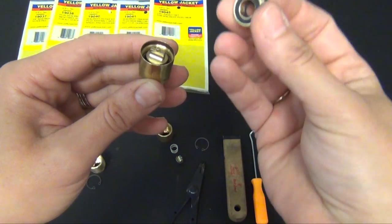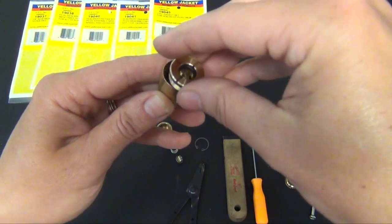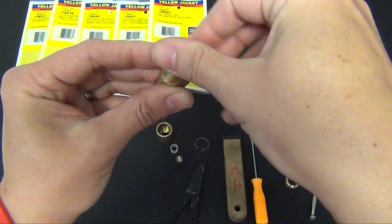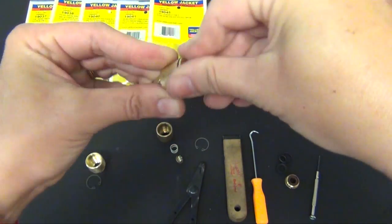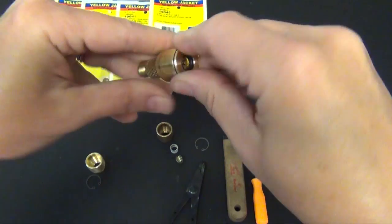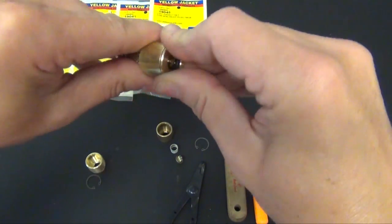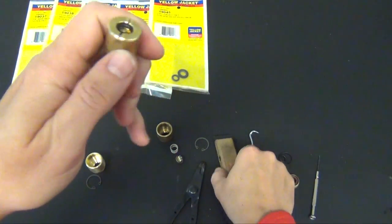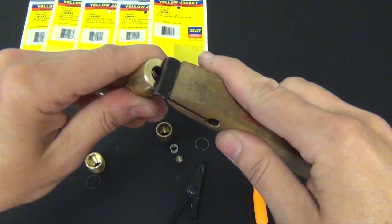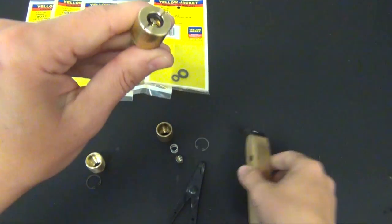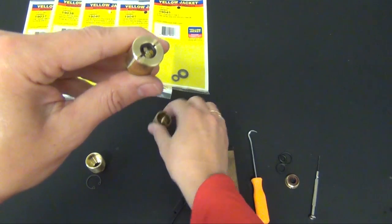We'll take our new retaining plug or our rebuilt one. Place it on top, turning clockwise and goes with your hand and then taking your straight edge tighten until snug.